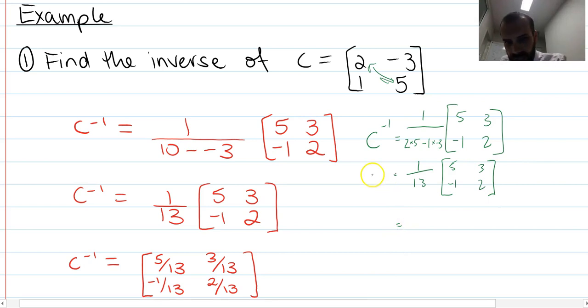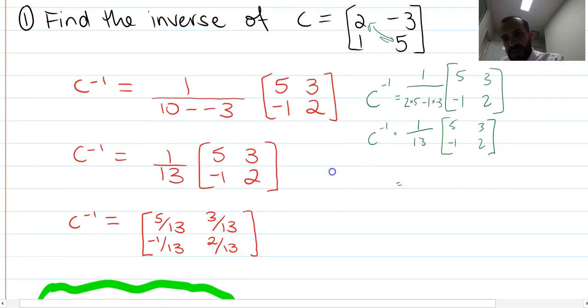Now we've got the inverse matrix is equal to 1 thirteenth times 5, 3, negative 1, 2. And we're just multiplying by a scalar there. We can put that 1 in 13 into our matrix by multiplying every element by 1 in 13. So it's 5 over 13, 3 over 13, negative 1 over 13, and 2 over 13. And that is our inverse.